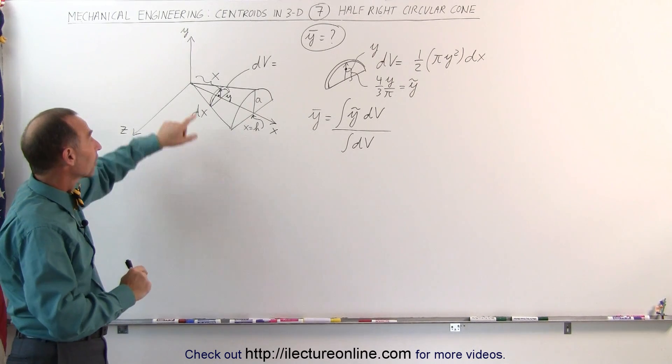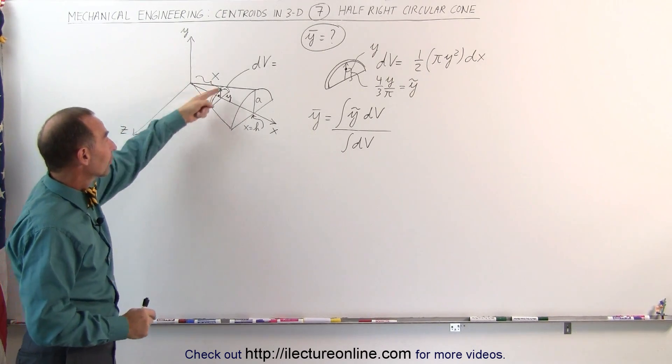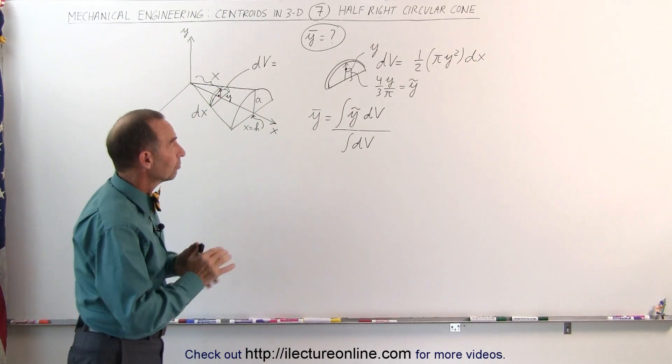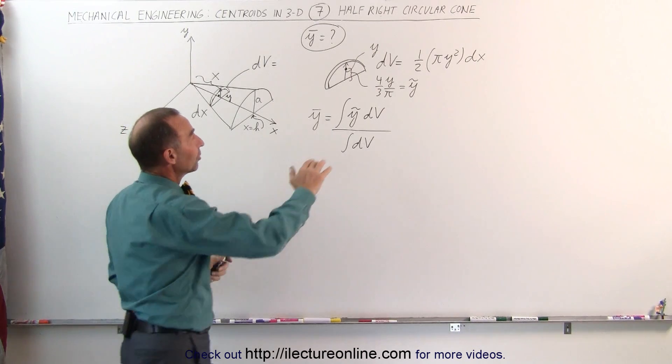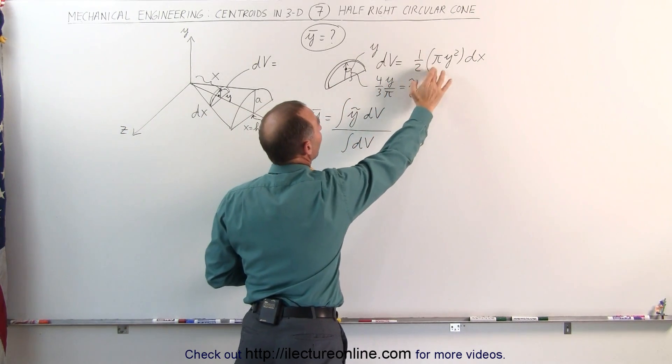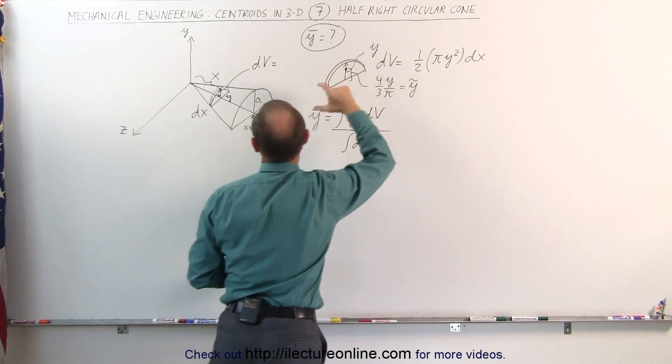We have the exact same drawing as before. Here's our little slice, it's going to be half of a disc so to speak. The volume is still the same, the volume is still one half pi y squared dx. Remember that the height here is y.